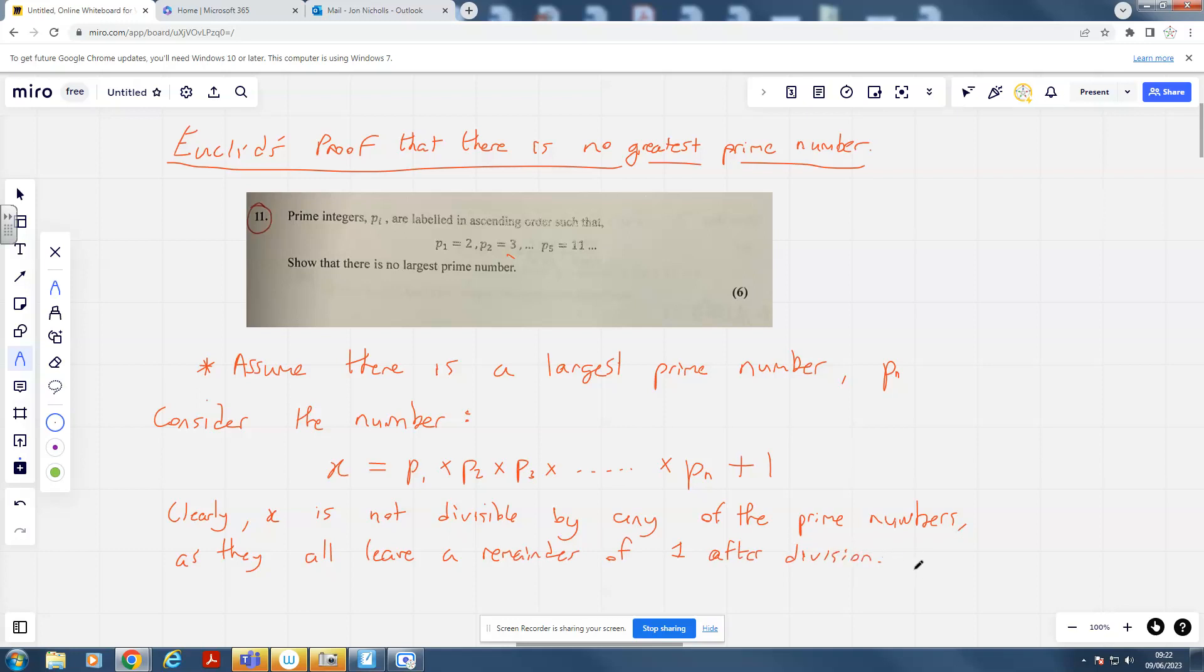Well, what can our conclusion be about X then? This implies that X must be prime itself. So X itself must be a prime number.